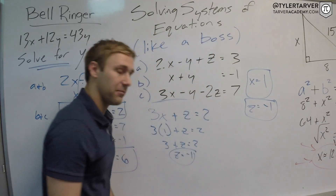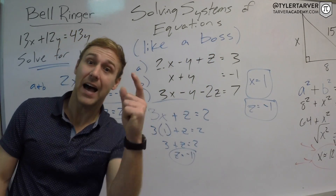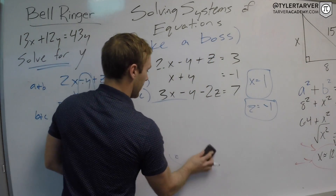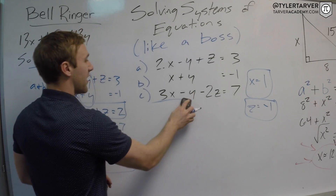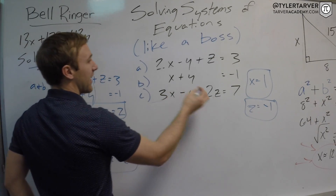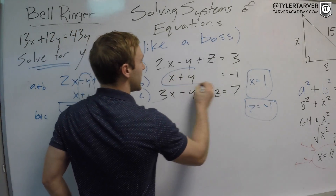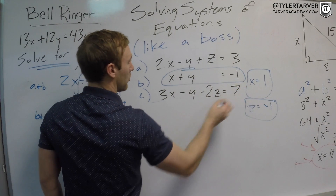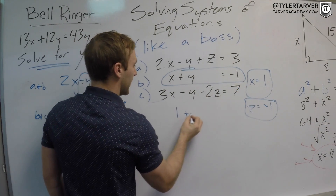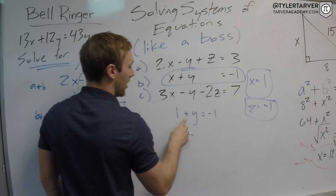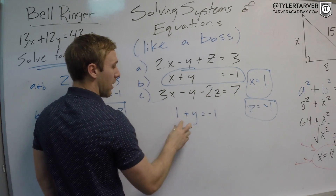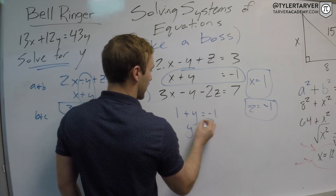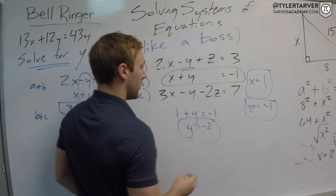But we're not done — we haven't found y yet! Easiest way is to use equation B: x plus y equals negative 1. Plug in x equals 1: 1 plus y equals negative 1. Subtract 1 from both sides: y equals negative 2. And that's it — you found all three answers!